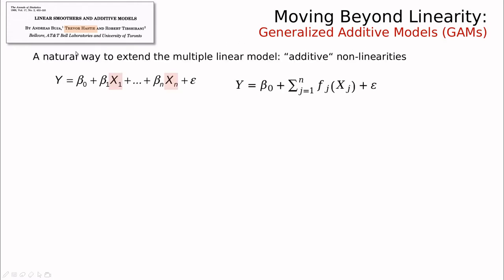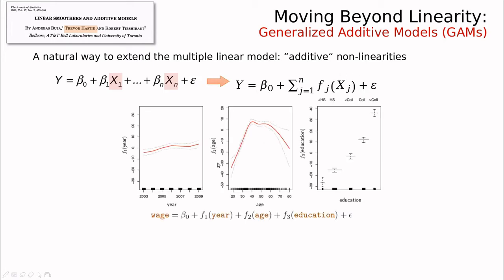A series of really influential papers by Trevor Hastie and collaborators in the late 80s introduced the concept of generalized additive models. The idea is that instead of using just linear combinations of the features x1 to xn, they introduced using a linear combination of functions, and these functions can be whatever. So going back to the example, if you want to predict weight, you could use a different function for different categorical or continuous variables — this could be linear, this could be a categorical relationship, and this could be a truly non-linear function.